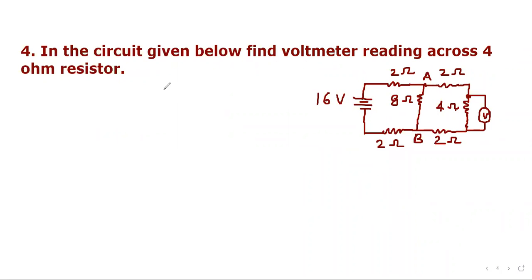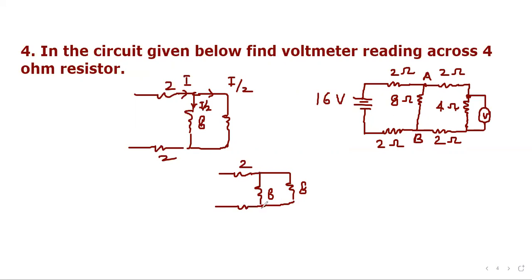Consider next question. In the circuit given below find voltmeter reading across 4 ohm resistor. So here let's evaluate the resistance. So we first evaluate resistance between A and B by this part. So it is 2, 4, 6 plus 2, 8. So we can say this is 2, this is 8, and this is 2, and this is also 8. So if current is coming like this then equal current I by 2 and I by 2 will pass. So let's see first what current is there. So in order to find current we find total resistance. So total resistance will be 2 and this 2, 8 ohm and this is also 8 ohm, and then this is 2 ohm. So it will be 2 plus 8 and 8 are parallel so they will get 4 ohm.